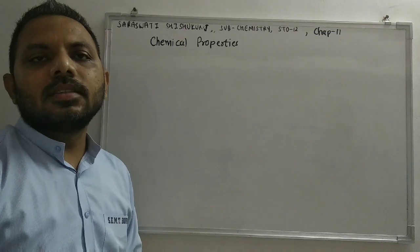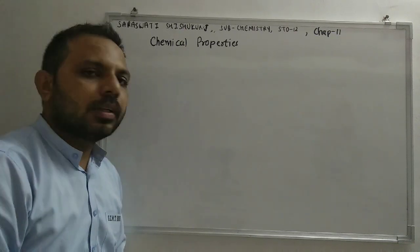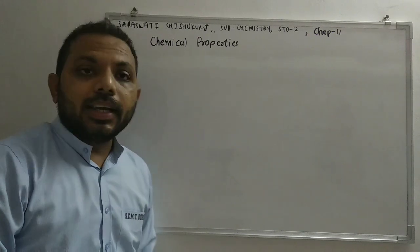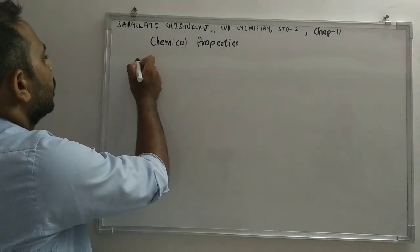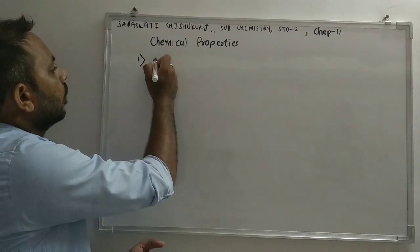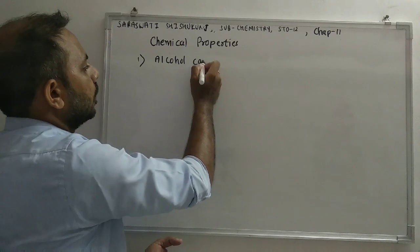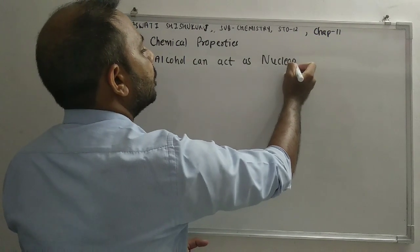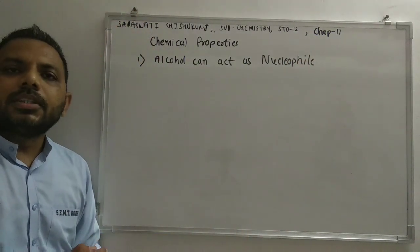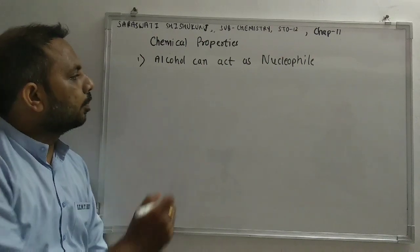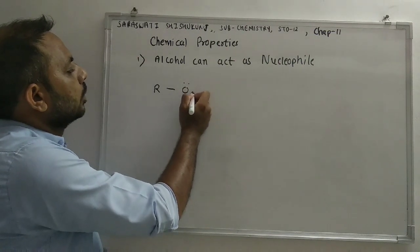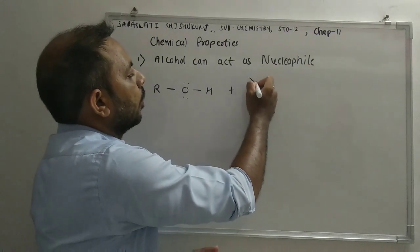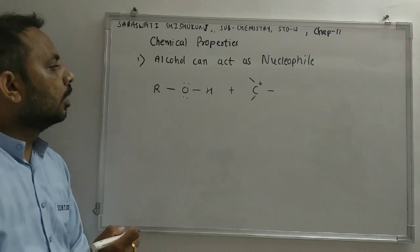Alcohol can act as a nucleophile as well as an electrophile. Let us understand this. In the first case, alcohol can act as a nucleophile. For example, we have alcohol and we have a carbocation.